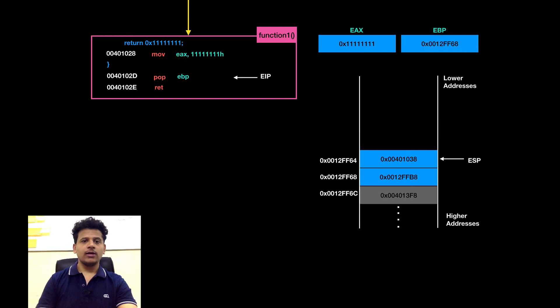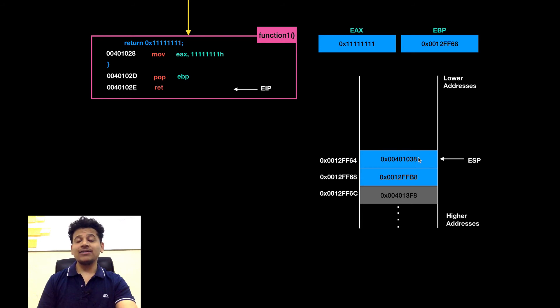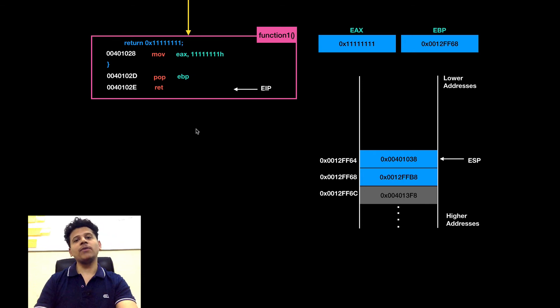Now function 1 is returning here: we will take the address from the top of the stack, that will get moved into the EIP, and EIP will begin execution from there.